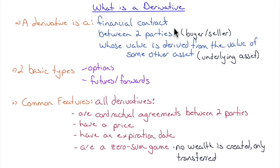A derivative is a financial contract between two parties — a buyer and a seller — whose value is derived from some underlying asset. A good example: you and I agree today on a price at which I might buy your car at some future time. The contract's value depends on the car's value. That's an option — one of the two basic types of derivatives, the other being futures and forwards.